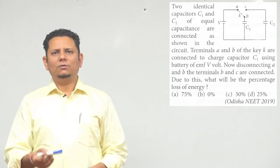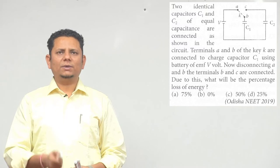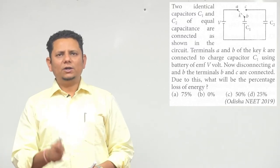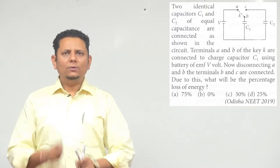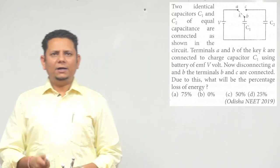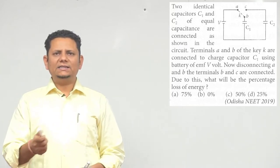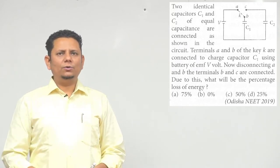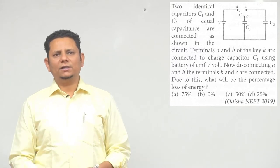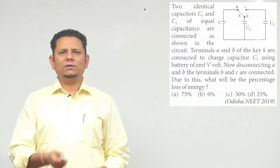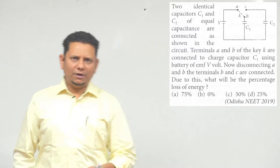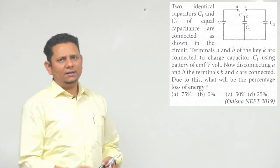Terminals A and B of the key are connected to charge capacitor C1 using battery of EMF V volt. Now disconnecting A and B, the terminals B and C are connected. Due to this, what will be the percentage loss of energy? Our options are 0%, 75%, 50%, and 25%. This is an easy question.